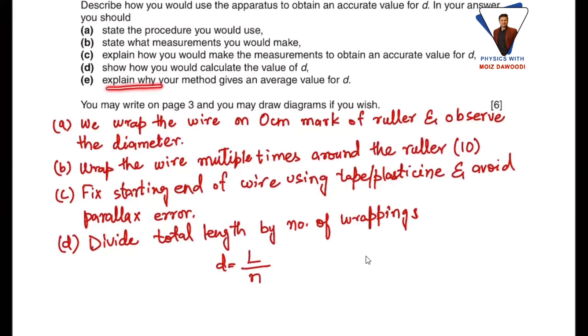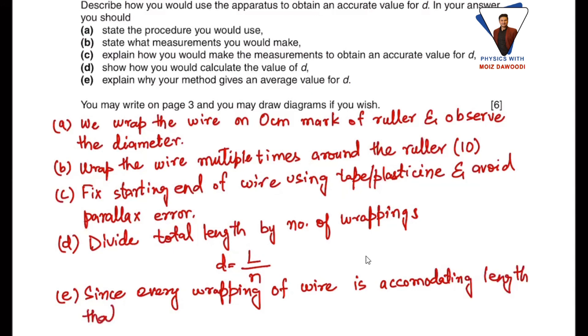And finally, explain how your method gives the average value for d. Since in our method each and every wrapping is accumulating some sort of length, that is why it's an average method.